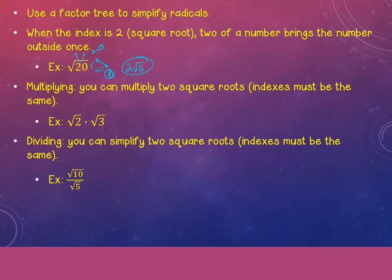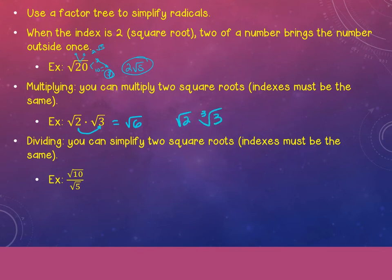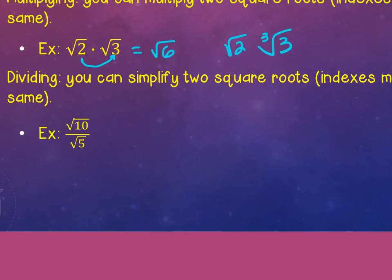When you're multiplying two radicals, you can multiply any two square roots, keeping the index the same. You can multiply any two cube roots, any two fourth roots. You cannot multiply a square root and a cube root. But if you do have two square roots, keep them both under the root and multiply what's underneath — so this would be the square root of 6. If I had square root 2 and cube root 3, I can't do anything with those — they stay as they are. When you're dividing, you can simplify two square roots: if they're both under the square root, you can simplify before rationalizing. So if I have square root 10 and square root 5, five goes into ten two times — it becomes square root 1, which goes away — and I just get square root 2.